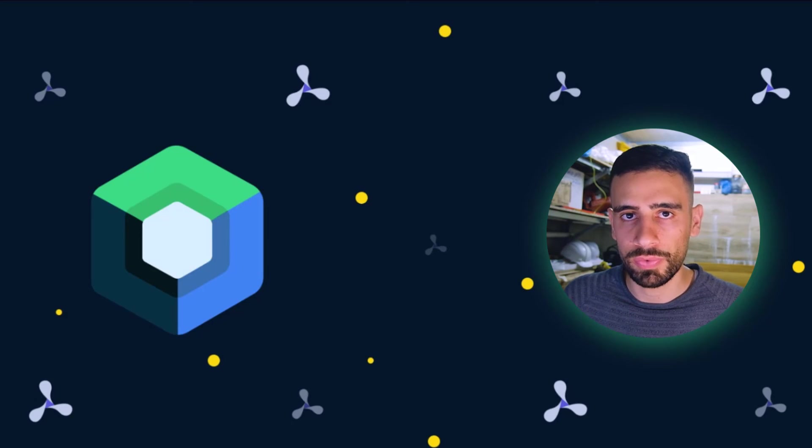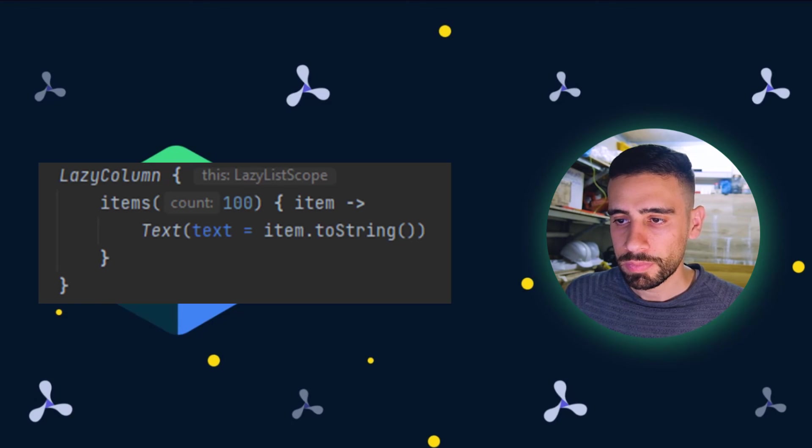So it actually took like 26 lines of code just to create a simple list that shows some text. Now let's see how to create that with Compose. As you can see we have this picture and that's it.